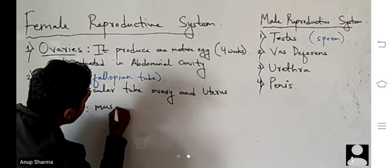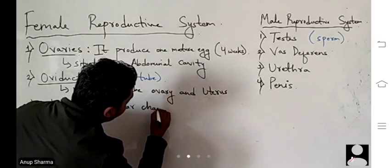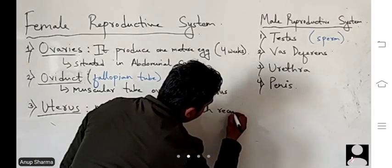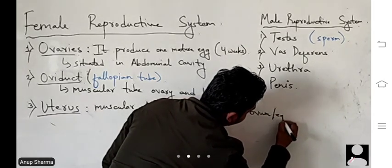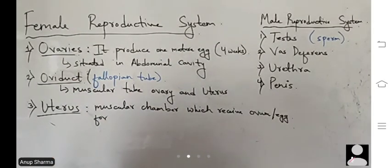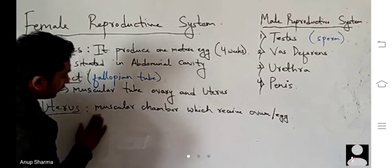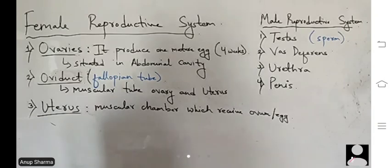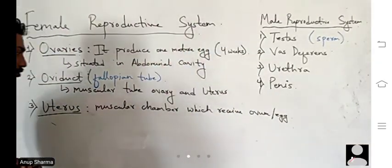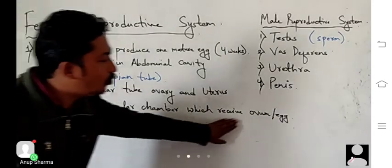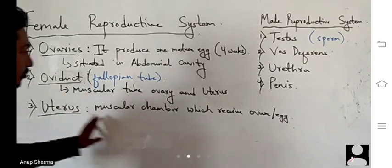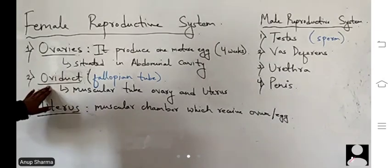The third part is the uterus. The uterus is a broad muscular chamber that receives the ovum or egg. It is a muscular chamber which receives the ovum for the formation of a zygote and for the development of the fetus. So the uterus is a muscular chamber which receives the ovum or egg from the ovaries through the oviduct.